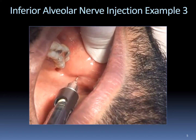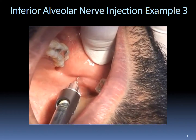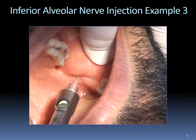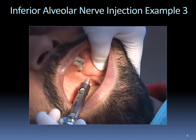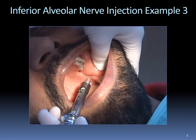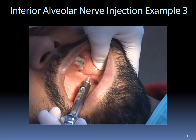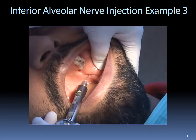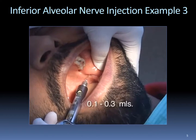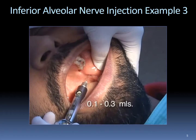Bony contact is essential to ensure the needle has not been advanced posterior to the ramus — this is the location of the parotid gland and the facial nerve. Injecting anesthetic into the parotid gland capsule could anesthetize the facial nerve, the motor supply for all muscles of facial expression, resulting in temporary unilateral facial paralysis instead of anesthetizing the teeth. The lingual nerve can be easily anesthetized at the same time as the inferior alveolar nerve. After depositing for the inferior alveolar nerve block, withdraw the needle approximately half its length, perform aspiration, and deposit approximately 0.1 to 0.3 milliliters of anesthetic.